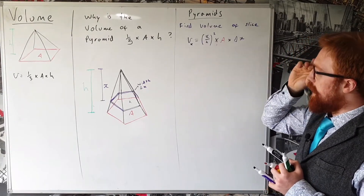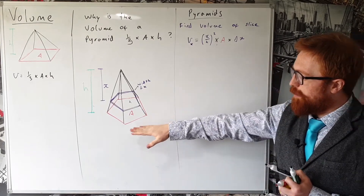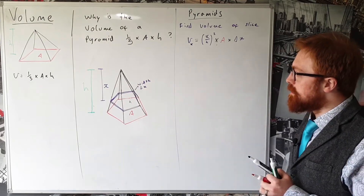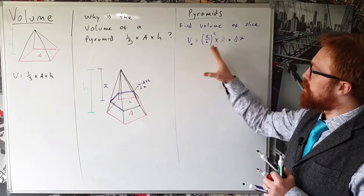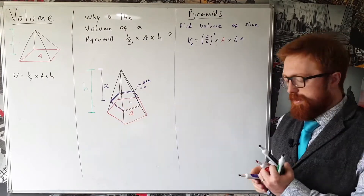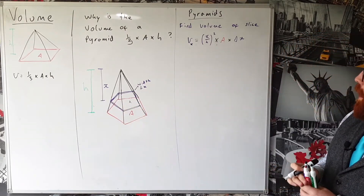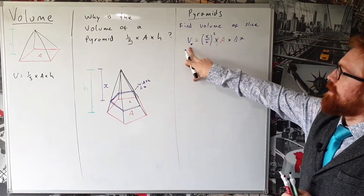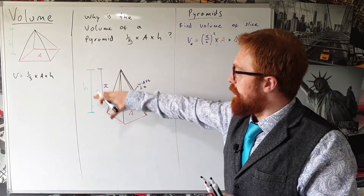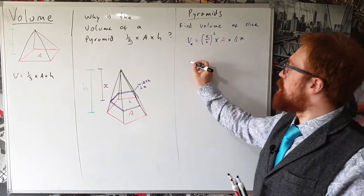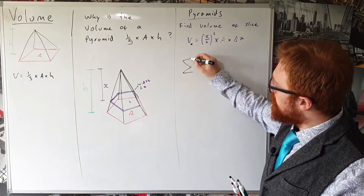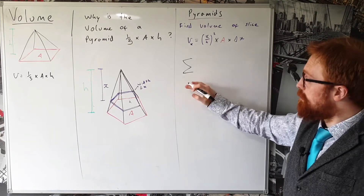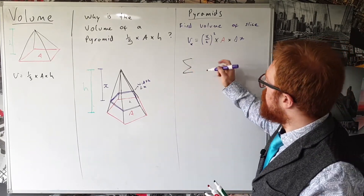Now we've found the volume of one slice, we're going to look at how we can add up all those slices and make them really, really thin, so that the sum of all the slice volumes equals the volume of the whole pyramid. So I'm going to use the Greek letter sigma — which means sum or add up — to add up all of these volumes.